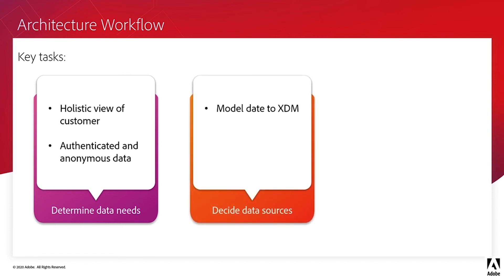Once we determine the data needs, we then decide where the data will be sourced from and how it will be onboarded. We need to model our data to the XDM schemas by mapping each field to the schema definition. Then, when we onboard the data, we know exactly what type of data we have.